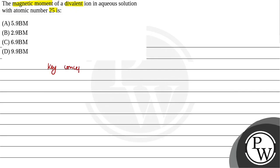The key concept of this question is electronic configuration. We see atomic number 25, which is manganese. Manganese electronic configuration is [Ar] 3d5 4s2. But we have a divalent ion, so Mn+2 configuration is [Ar] 3d5 4s0.